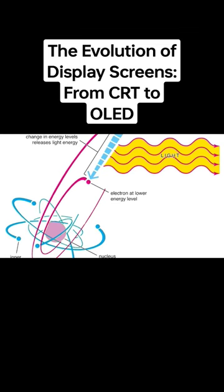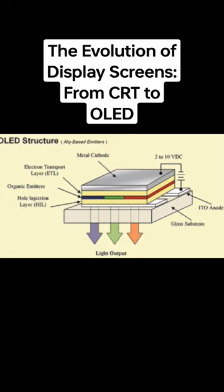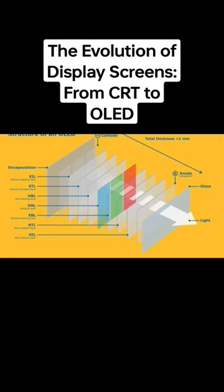Finally, in the 1980s, researchers at Kodak discovered that organic material could emit light when electric current was applied, leading to the development of OLED displays that produced bright, vibrant colors and high contrast levels.